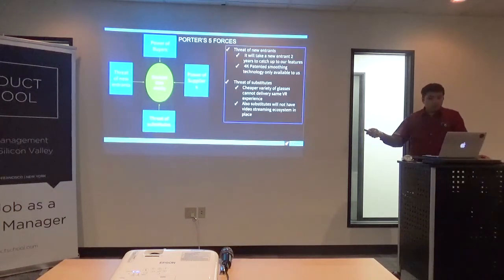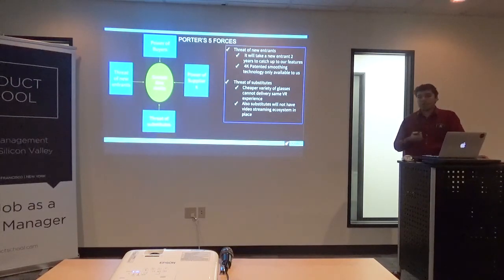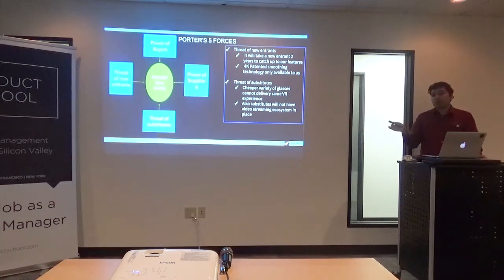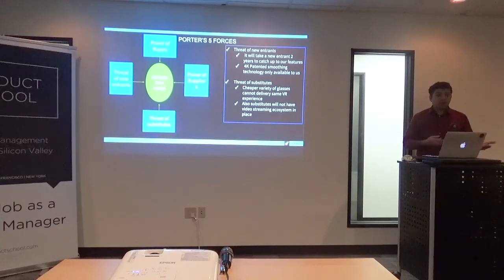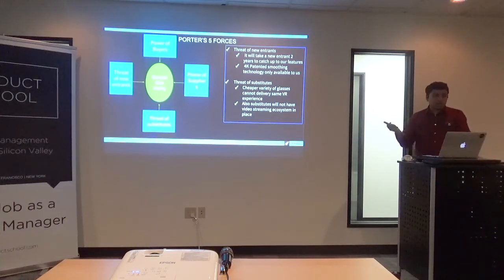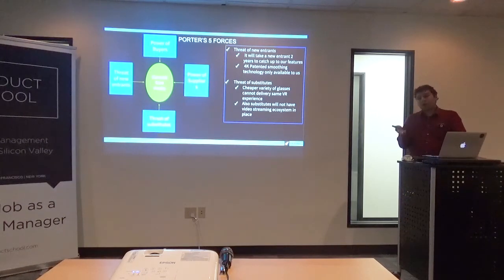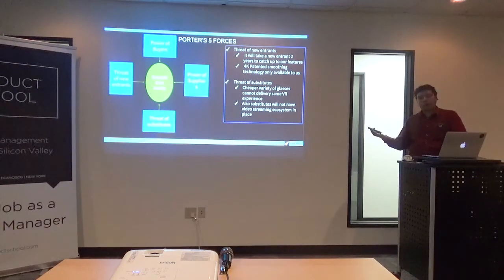The last two buckets are threat of new entrants and competitive rivalry. Depending on analysis from your engineering team and other sources, you could decide the threat of new entrants — it might take a new entrant two years to catch up to your thesis, giving you a head start. Maybe you have a patent on this 4K streaming technology that only you possess, preventing new entrants from replicating it. If it's a segment where a new entrant could easily disrupt, that will change your timelines and product market strategy — maybe you'll go to market sooner in Asia versus the US.